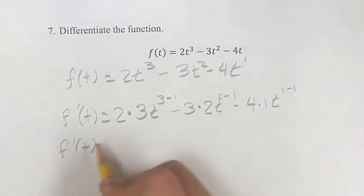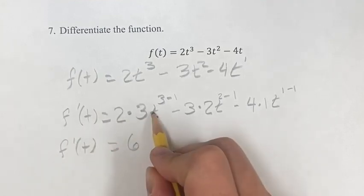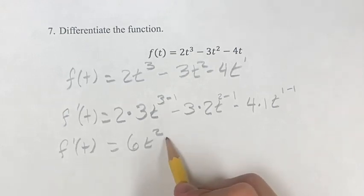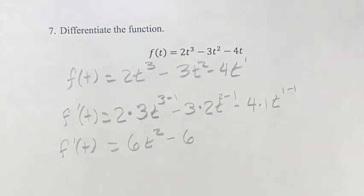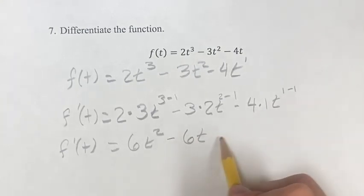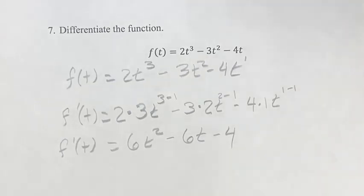Now this is something we can simplify. 2 times 3 is 6, t to the 3 minus 1 is 2, minus 3 times 2 is 6, t to the 2 minus 1 is t to the 1. t to the 1 is just t, minus 4 times 1, minus 4. t to the 0 is just 1, so we don't even have to put it in there.